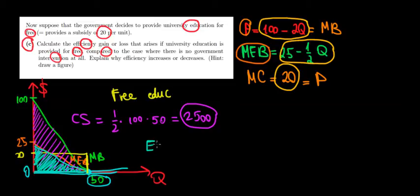Let's calculate that as well. The external benefit is also a triangle, which is a half times this height, which is 25 multiplied with this length of 50. So 25 times 50 divided by 2. 50 divided by 2, that's 25. 25 times 25, that's 625. So that's one more gain.